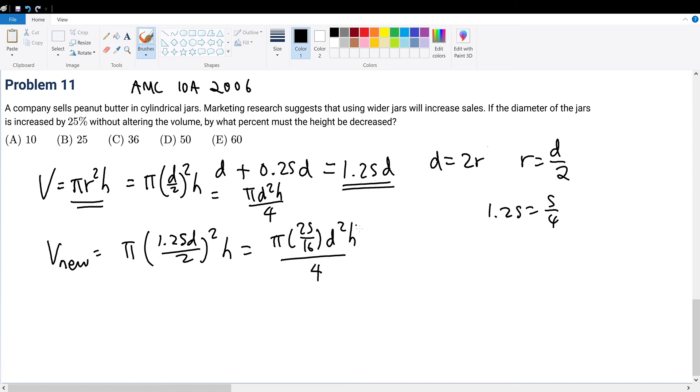Everything is the same except the coefficient must match. So h must be multiplied by the reciprocal of 25/16, which is 16/25, to keep the volume the same.